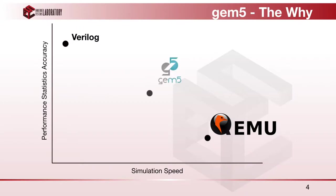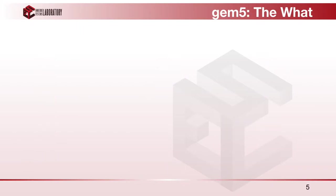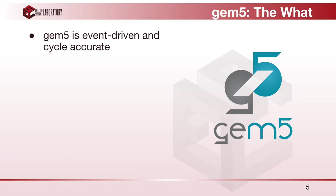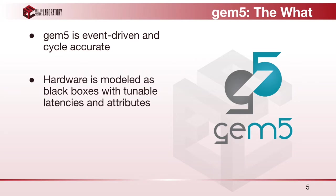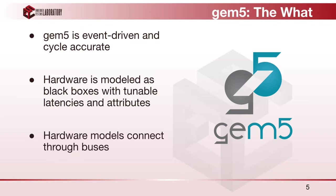This is where GEM5 comes in. GEM5 is a highly modular and extensible system-level computer architecture simulator representing a middle ground between the aforementioned simulators. GEM5 is a discrete-event, cycle-accurate simulator that models computer architectures as a set of black boxes with latencies and attributes, all connected by various buses and ports as defined by a configuration script. The latencies and system configurations in GEM5 can be tuned to match real hardware, yielding representative performance statistics within a small margin of error.